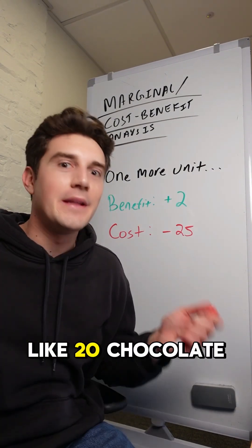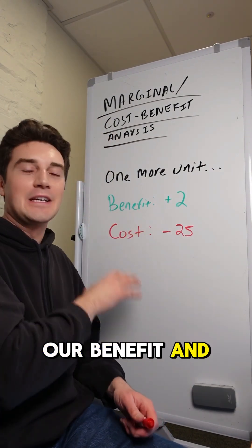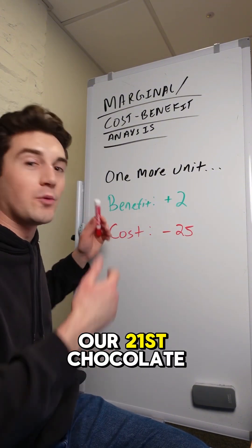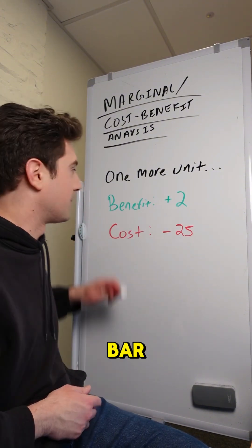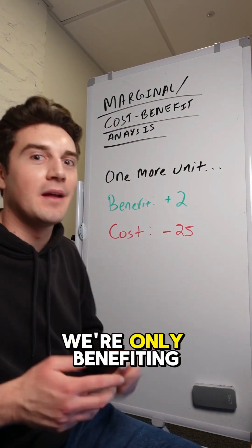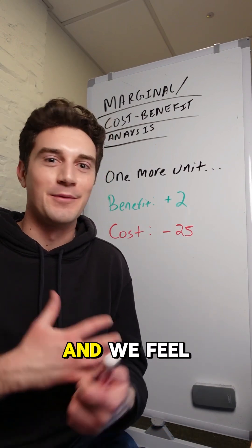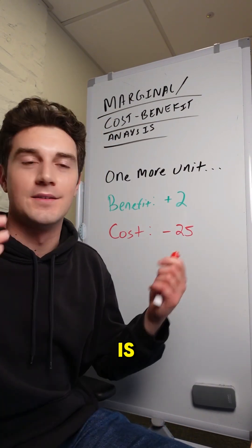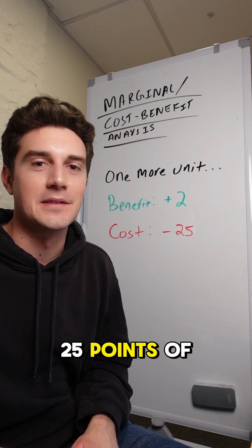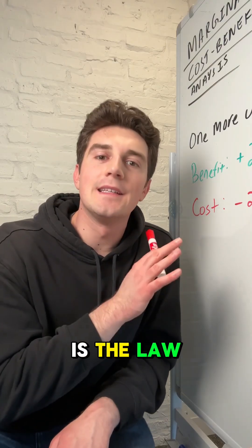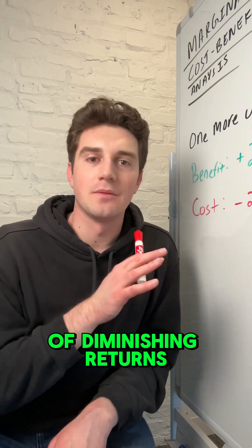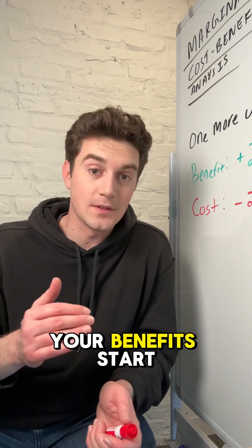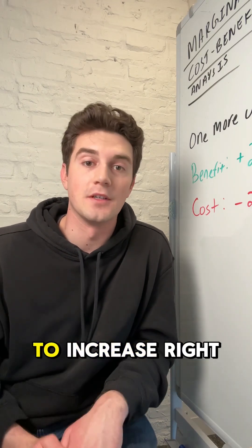But after having like 20 chocolate bars, our benefit and costs are going to look a little different. We wouldn't consume our 21st chocolate bar because at that point we're only benefiting two happiness points — we're full and we feel disgusting — and the cost of that next chocolate bar is 25 points of your stomach hurting. This is the law of diminishing returns: as you consume more and more units, your benefits start to decrease and your costs start to increase.